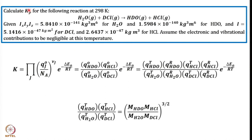Whether you write Kp or K, it means the same thing. The given information is the product of moments of inertia: Ix·Iy·Iz equals 5.84×10⁻¹⁴¹ kg³·m⁶ for H₂O, and a similar number is given for HDO. Remember that H₂O and HDO are non-linear molecules, so they have all three moments of inertia and rotational constants A, B, C. For DCl and HCl, which are linear rotors, only one moment of inertia is required, and those values are given.